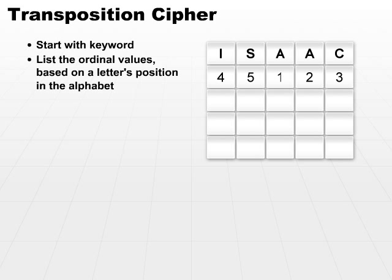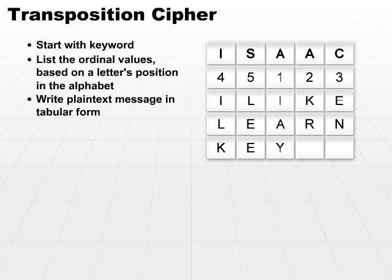Now, it's interesting that this actually shaped up to be just splitting it in half and moving forward. But if you have a complex word, it will end up numbering your columns in different fashions. So at that point, after I've listed the ordinal values, I write the plaintext message in tabular form into my table. So the plaintext I'm going to use is I like learn key.